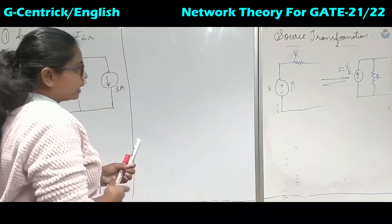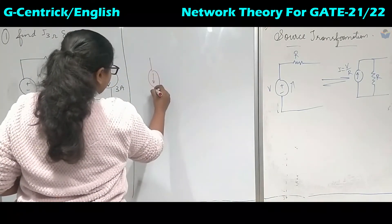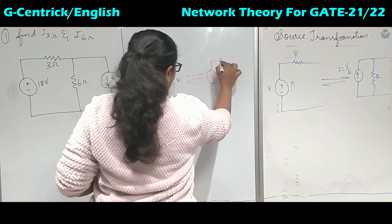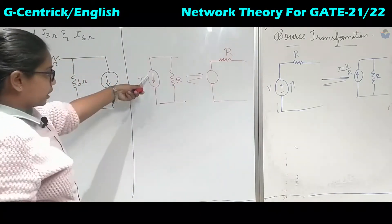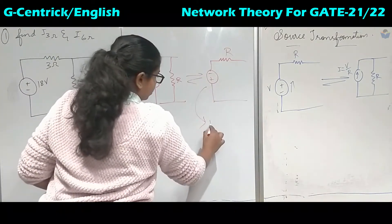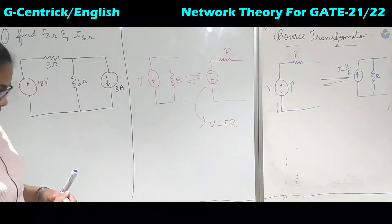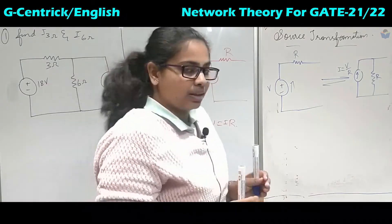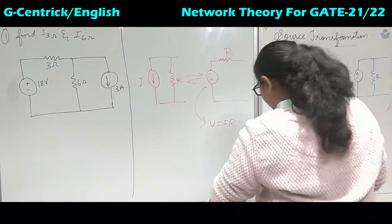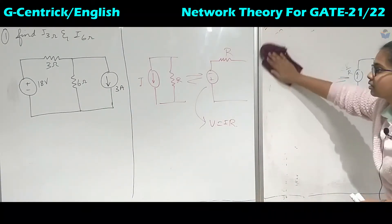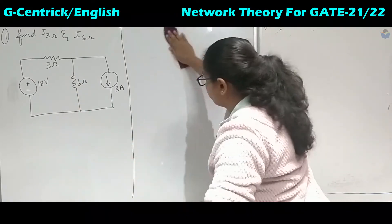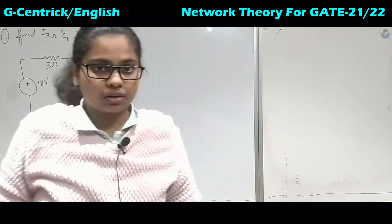To convert a current source to a voltage source: if you have a current source with a resistor connected in parallel, the resistor value stays the same. If the current direction is downward, the plus polarity will be at the bottom and negative at the top. The value of the voltage source is V = I × R using Ohm's law. Note that source transformation is a difficult concept and cannot be applied to all networks. We will verify this by first solving an example problem using nodal analysis to find I₃Ω and I₆Ω, then applying source transformation.